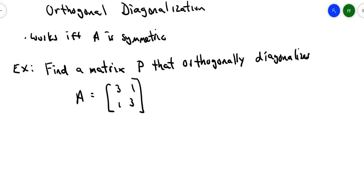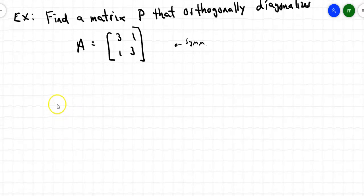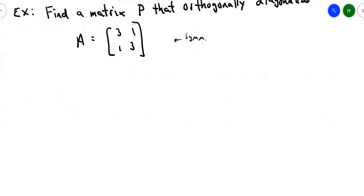Here's the question: find a matrix P that orthogonally diagonalizes this matrix [[3, 1], [1, 3]]. I picked a 2 by 2 — let's keep it simple. Notice first of all that this is a symmetric matrix; the rows become the columns and the columns become the rows. We'll start with the characteristic polynomial and work forward from there, taking the determinant of λI minus A and setting it equal to 0.